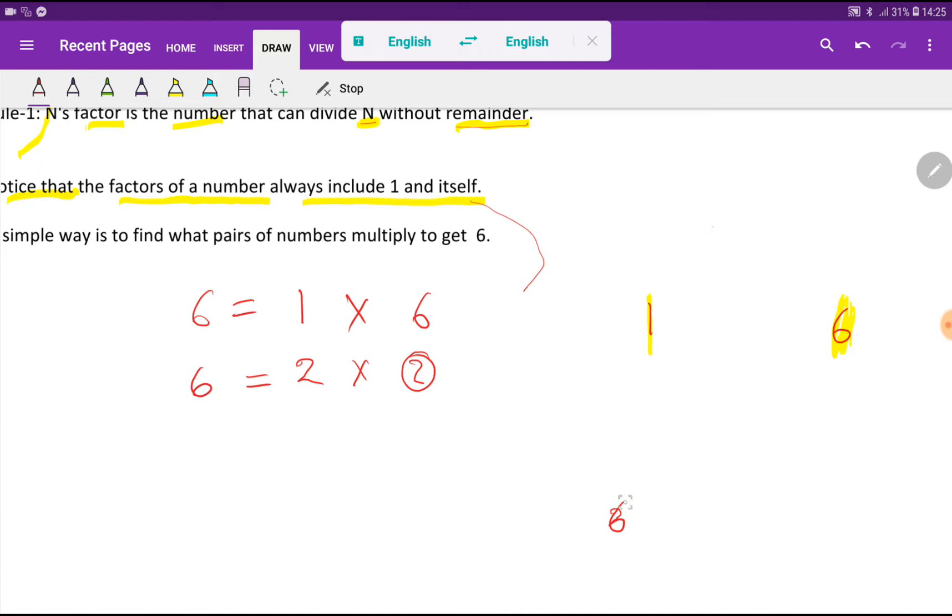If you divide 6 by 2, then what you will get? You will get 3. This quotient 3 will come here. So 2 and 3 are the factors of 6. Let me write here 2 and then 3.